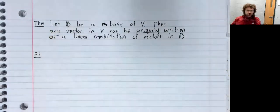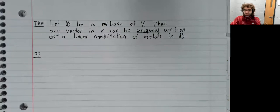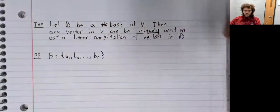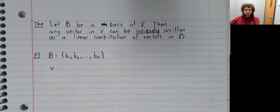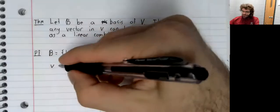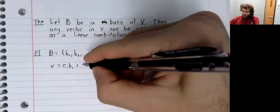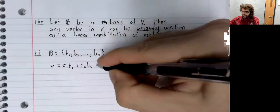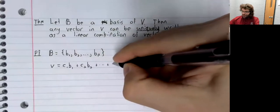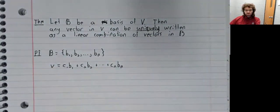Let's prove this. Suppose we have a basis B, and now suppose we have a vector V. By virtue of the fact that B is a basis, any vector in V can be written as a linear combination of these basis vectors.